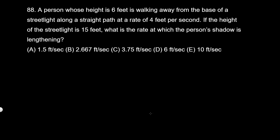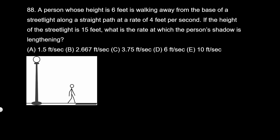You may pause the video and try this first. This problem is from 2012. A person whose height is 6 feet is walking away from the base of a street light along a straight path at a rate of 4 feet per second. So from here to here, that distance increases 4 feet per second.